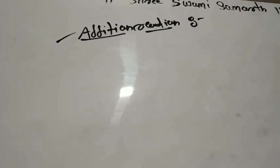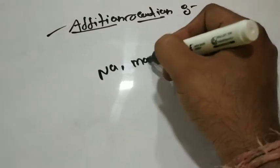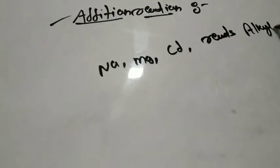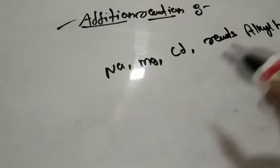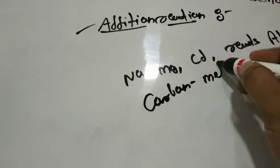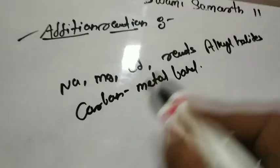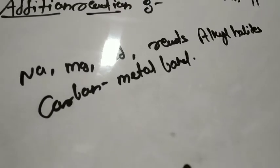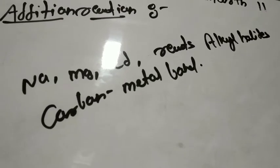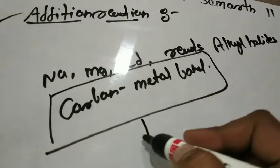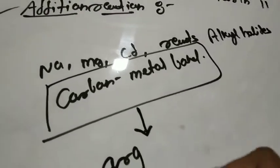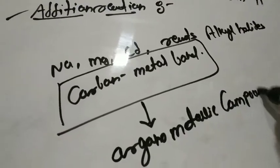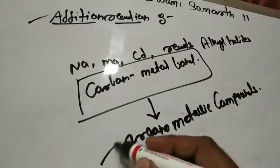The active metals like sodium, magnesium, and cadmium react with the alkyl halide to form a carbon-metal bond. The compounds formed by this carbon-metal bond are called organometallic compounds. This is a very, very important topic — organometallic compounds.